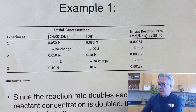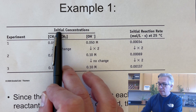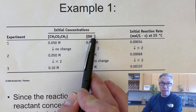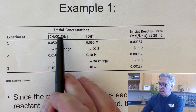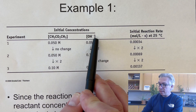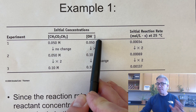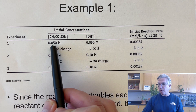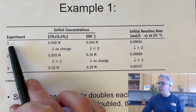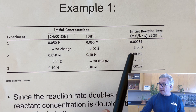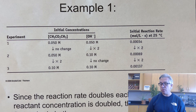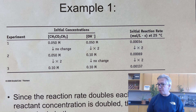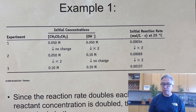For example, if there was a reaction between this molecule and some OH ions — ignoring the products — with initial concentrations of 0.05 and 0.05 in experiment one, and we find that the initial rate is 0.00034 moles per liter per second. This is called the method of initial rates.